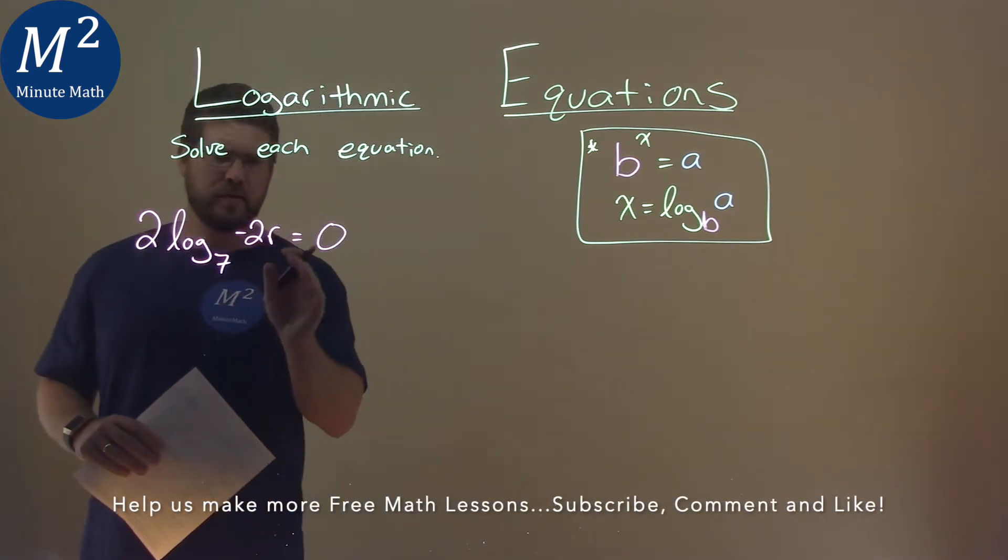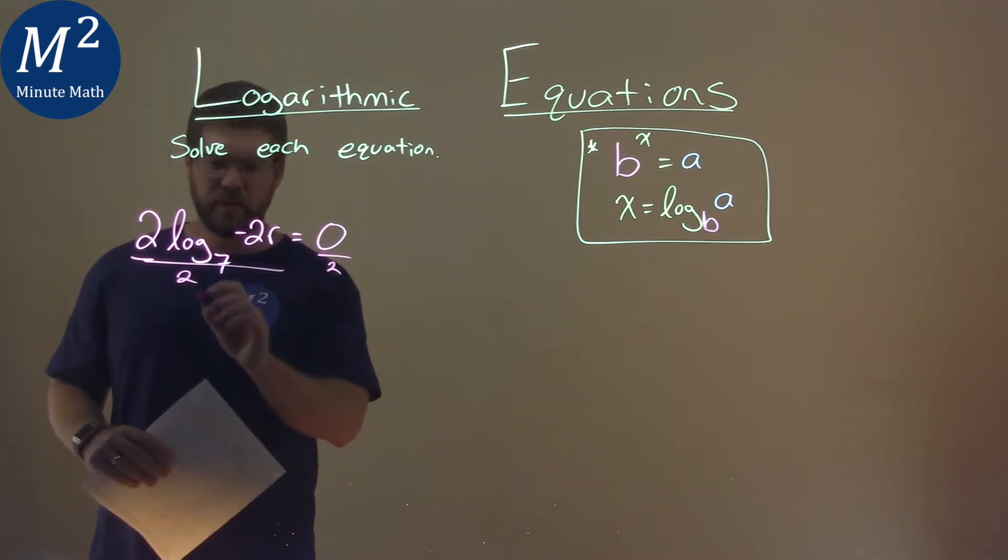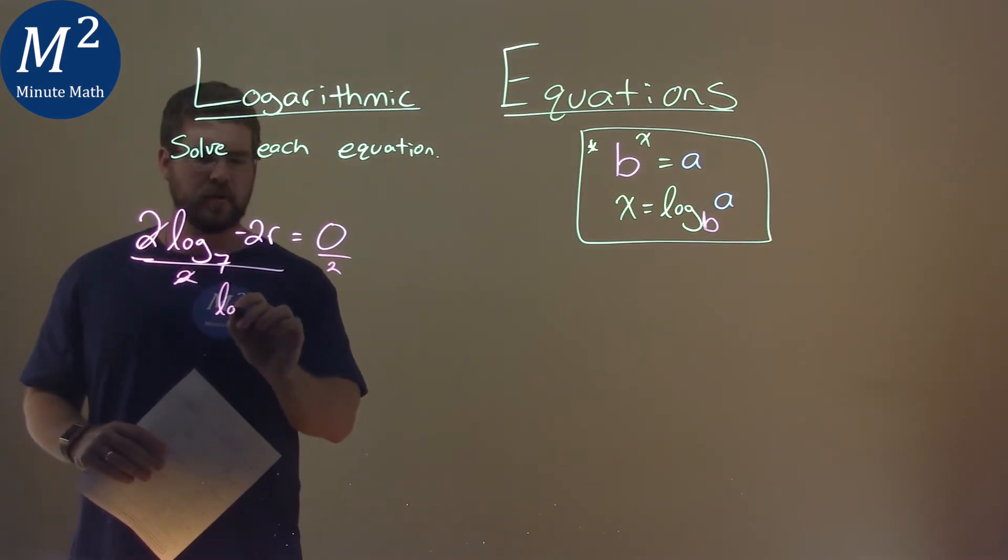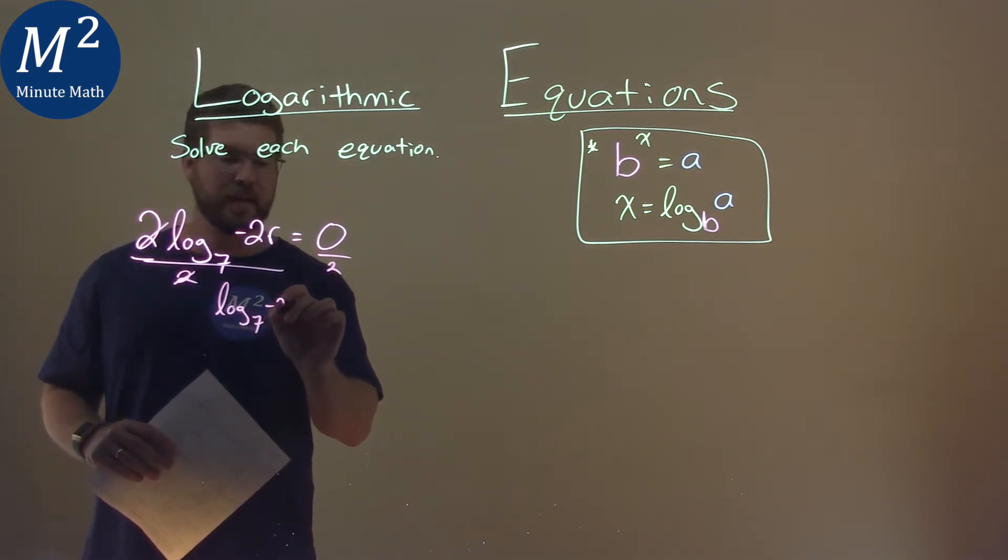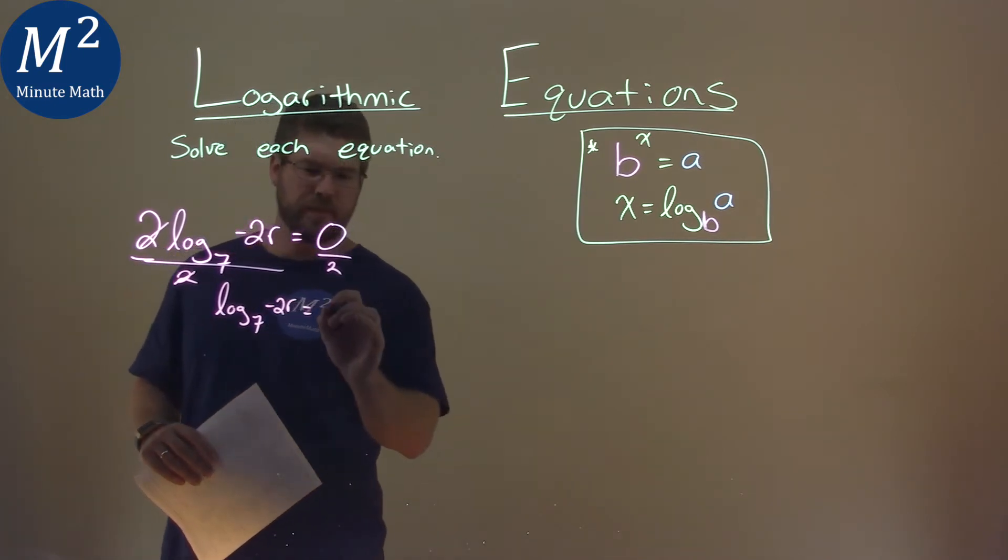Well the first thing I need to do, let's divide both sides by 2. In doing so these 2's cancel, we still have log base 7 of negative 2r. That's equal to 0 over 2, which is 0.